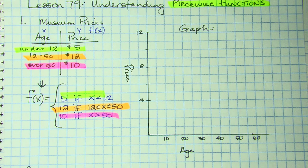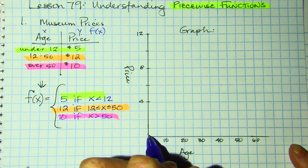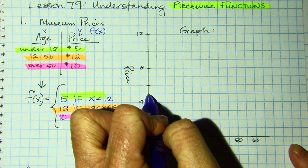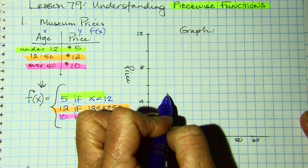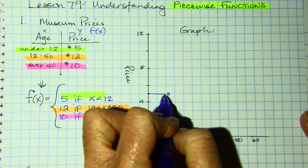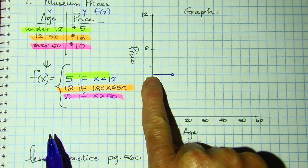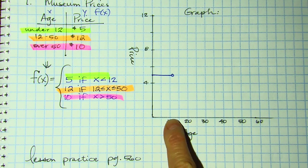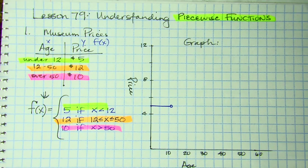Let's go over how to graph a simple piecewise function. F of X equals 5 if X is less than 12. On the left I have price, so $5 if X goes from 0 to — but it's not equal to 12. So I'm going to do an open circle and a flat line, because it's $5 for anyone 0 to 12 years. I approximated that 12 is right there because this is 15, so I just did my best estimation.